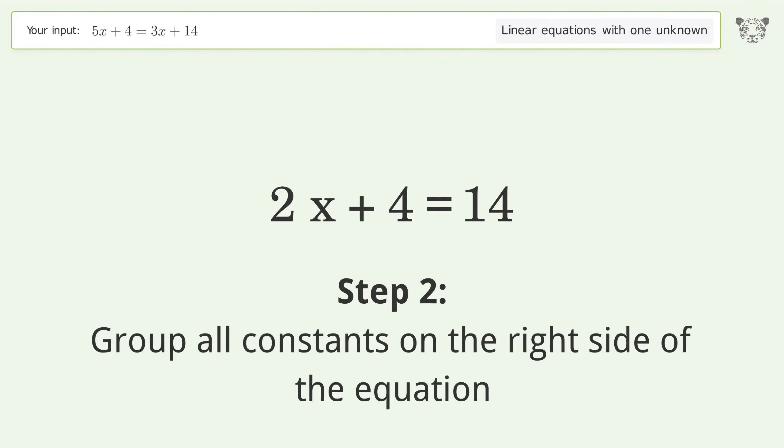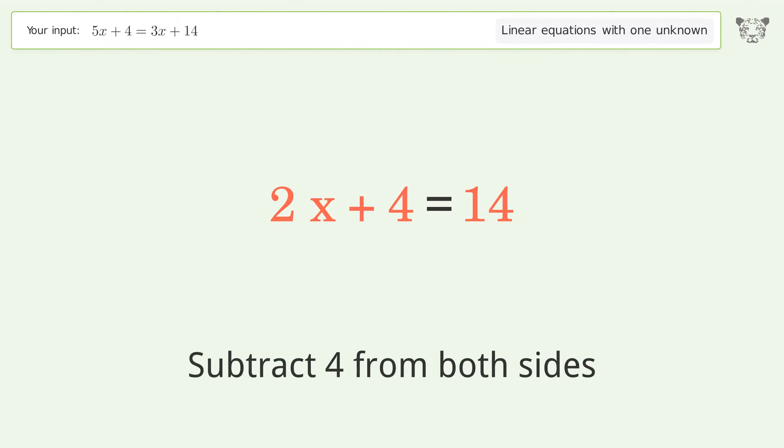Group all constants on the right side of the equation. Subtract 4 from both sides.